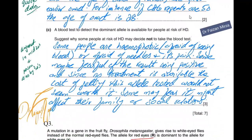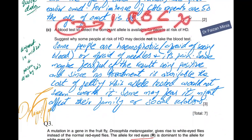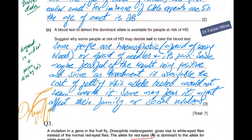A blood test used to detect the dominant allele is available to those at risk of HD. So what sample are you taking? Are you taking red blood cells? No, you can't take red blood cells because they do not have a nucleus. So we take white blood cells from the blood sample, extract the gene from the white blood cells, and test it for the disorder. For every gene testing, we take the allele from the white blood cells in the blood sample.